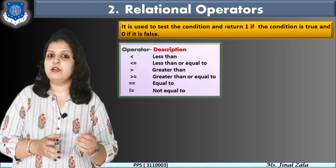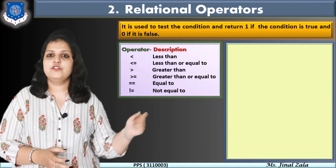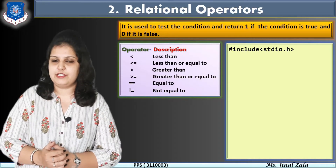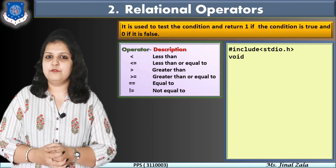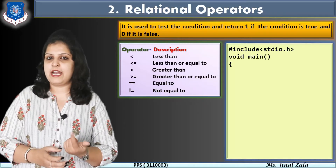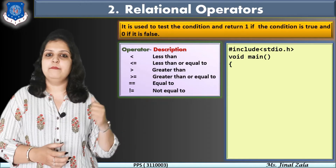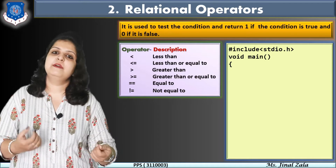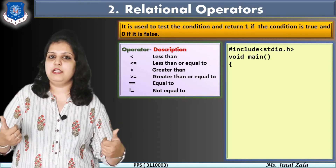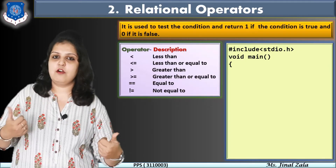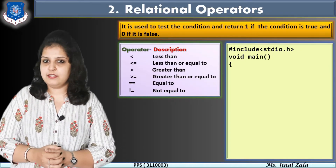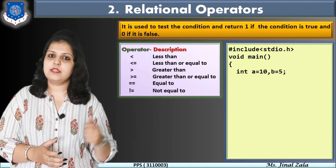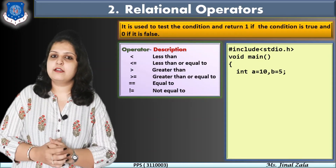Now how can we write a program using relational operators? First include the library: hash include stdio.h. Then write void main. Suppose I want to check which of two numbers is maximum — I have variables a and b, and I want to check if a is max or b is max. First declare the variables: integer a is equal to 10 and b is equal to 5. Here I am assigning the value at compile time; you can also use the scanf function to take input from the user at run time.